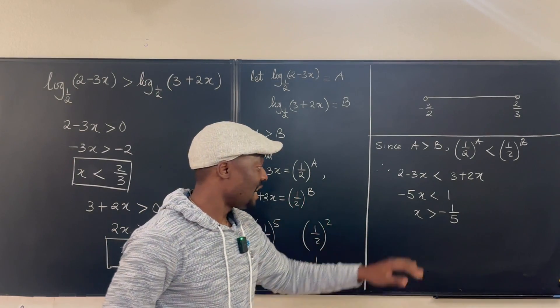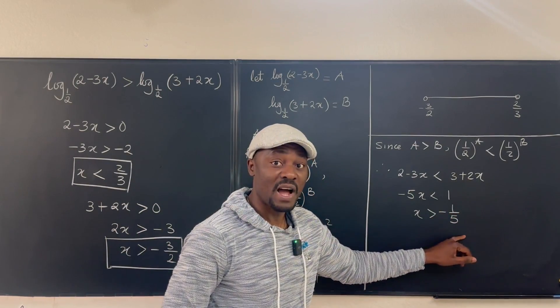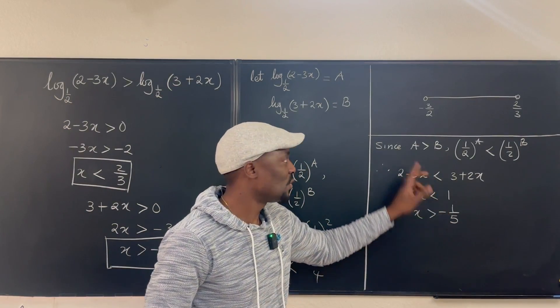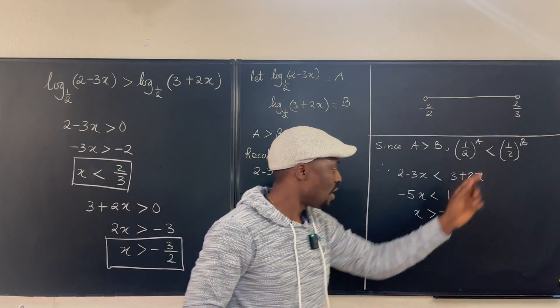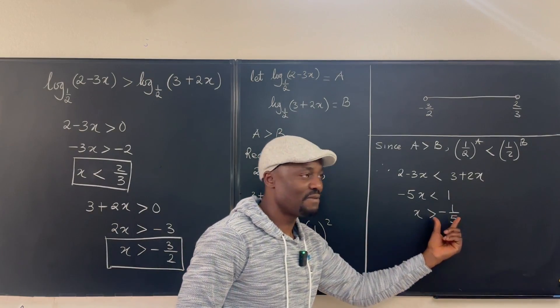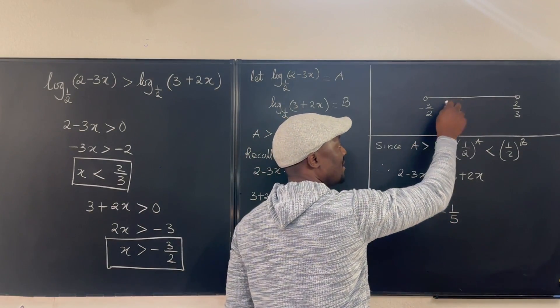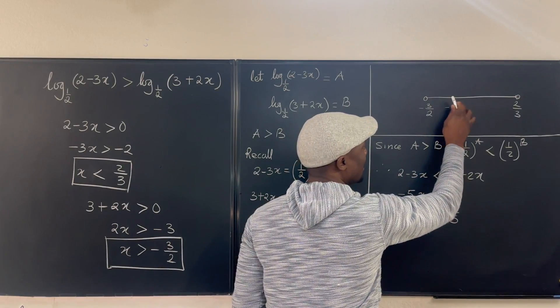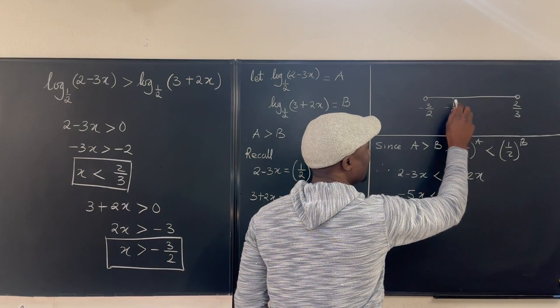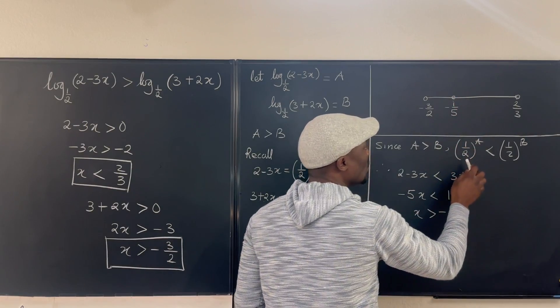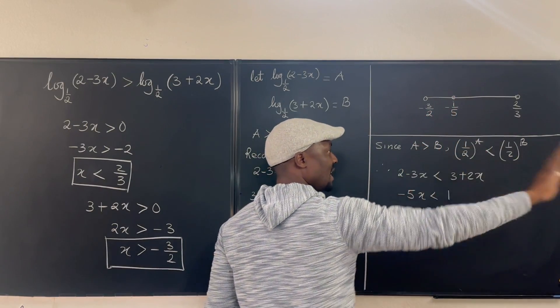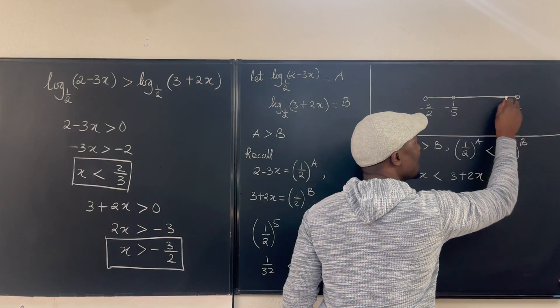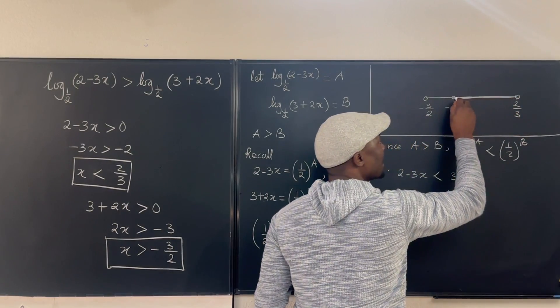So any number that is greater than negative 1 over 5 will satisfy this inequality. But remember, you have to restrict it to the domain of it. So if we move this x to the negative 5, we go find a position for it here. It's definitely somewhere here. So it's going to be negative 1 over 5. It's another hole. So because we're looking for something greater, our answer is between negative 1 over 5 and 2/3.